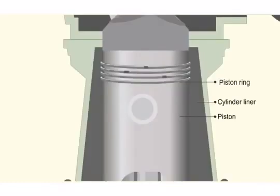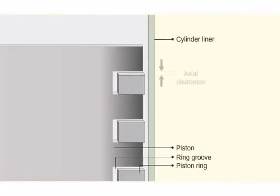Axial clearance is the clearance from the top of the ring to the top of the ring groove. The combustion gases exert pressure behind the piston rings and push towards the liner for proper sealing.